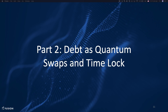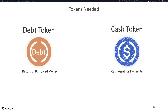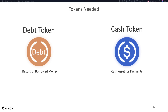Now that we understand debt, I will explain how Fusion models this instrument. First, let's introduce two tokens: a debt token and a cash token. The debt token is the marker that lets a lender claim her right to borrow money. The cash token represents the working cash, or capital, that is actually borrowed and paid back in the end. Let's model the exchanges between Jill and Jane using these two tokens.